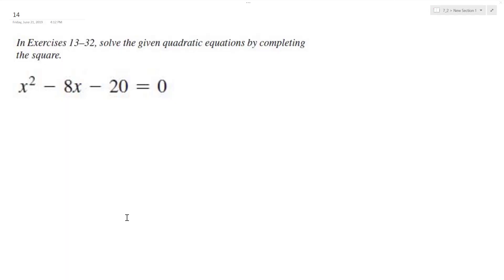All right, so let's go ahead and figure out the solution to this problem by completing the square. First thing you need to do is get the constant on a separate side of the equation. So I add 20 to both sides. I have x squared minus 8x is equal to 20.